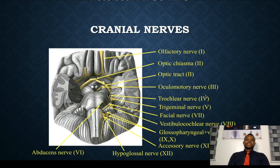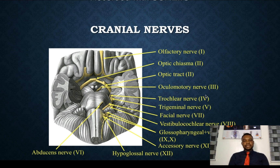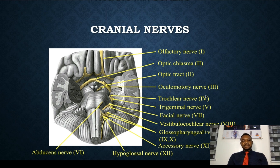Now coming to the cranial nerves, it is important to note the 12 cranial nerves. Number one: the olfactory nerve. Number two: the optic nerve. Number three: the oculomotor nerve. Number four: the trochlear nerve. Number five: the trigeminal nerve — importantly, the trigeminal has three components: the ophthalmic nerve, the maxillary nerve, and the mandibular nerve. Number six: the abducent nerve. Number seven: the facial nerve. Number eight: the vestibulocochlear nerve. Number nine: the glossopharyngeal nerve. Number ten: the vagus nerve. Number eleven: the accessory nerve. And number twelve: the hypoglossal nerve. Those are the 12 cranial nerves.